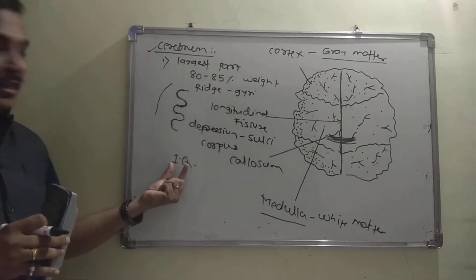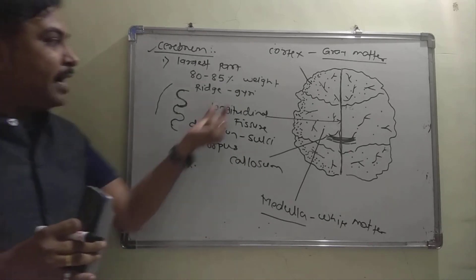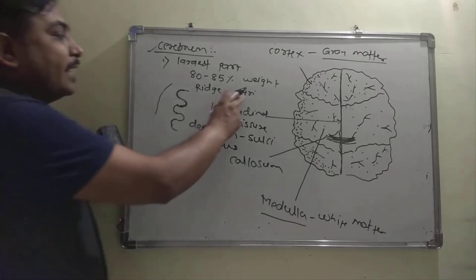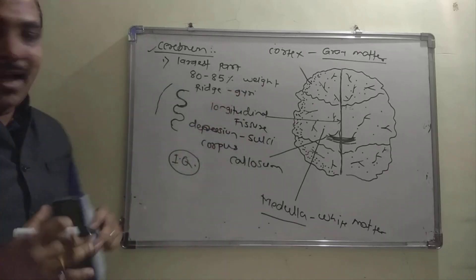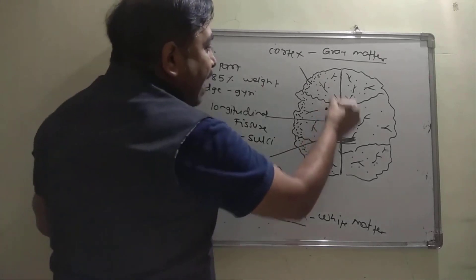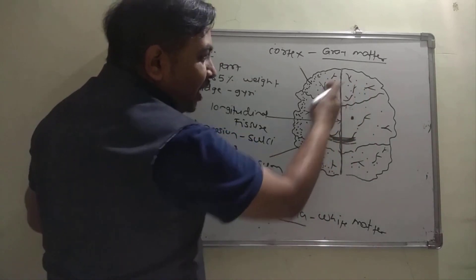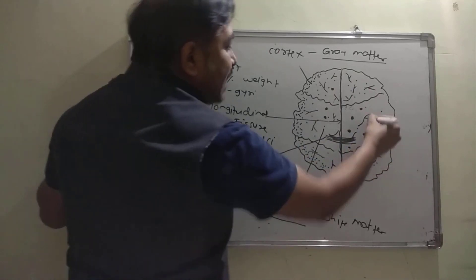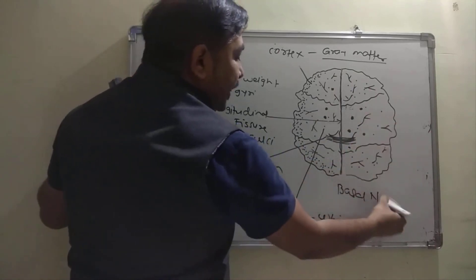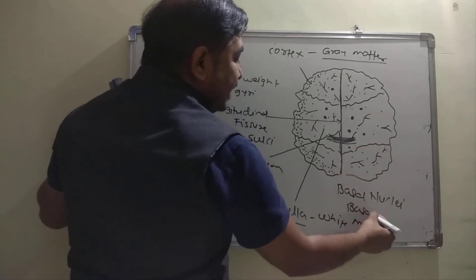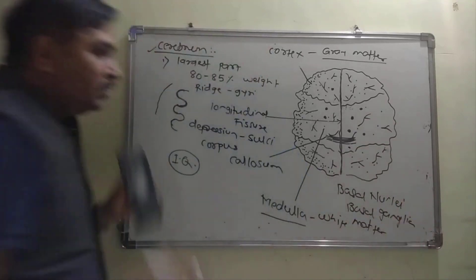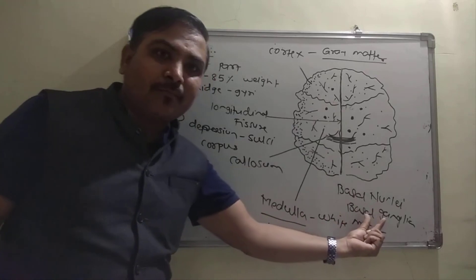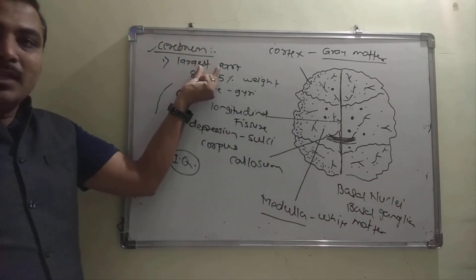The gyri and sulci pattern determines your IQ, and this pattern is different in every brain. Additionally, there are masses of grey matter located within the white matter of the cerebrum. These are called either basal nuclei or basal ganglia.